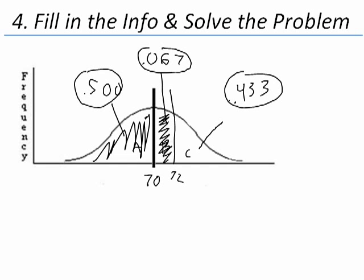Now to solve our problem, we're only interested in the people who are below 72. So just this area, 0.500 and the 0.067. So we'll just need to add up those two values. 0.500 plus 0.067, that comes out to be 0.567.